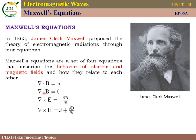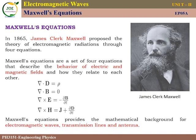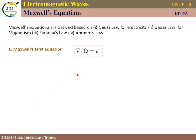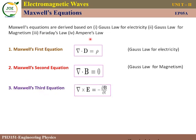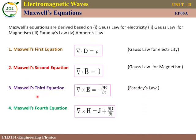In the previous video lecture, the first two Maxwell's equations were derived. In this remaining part, the third and fourth equation derivations are covered. We already discussed Gauss's law for electricity and for magnetism to derive equations one and two. Now we are going to use Faraday's law and Ampere's law for the third and fourth equations.